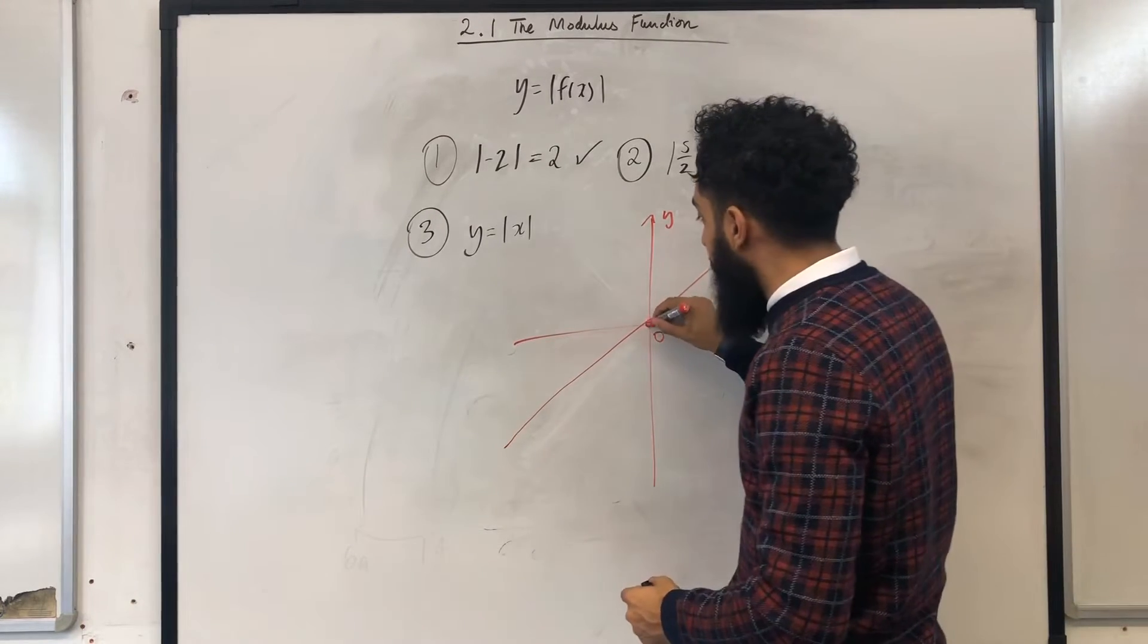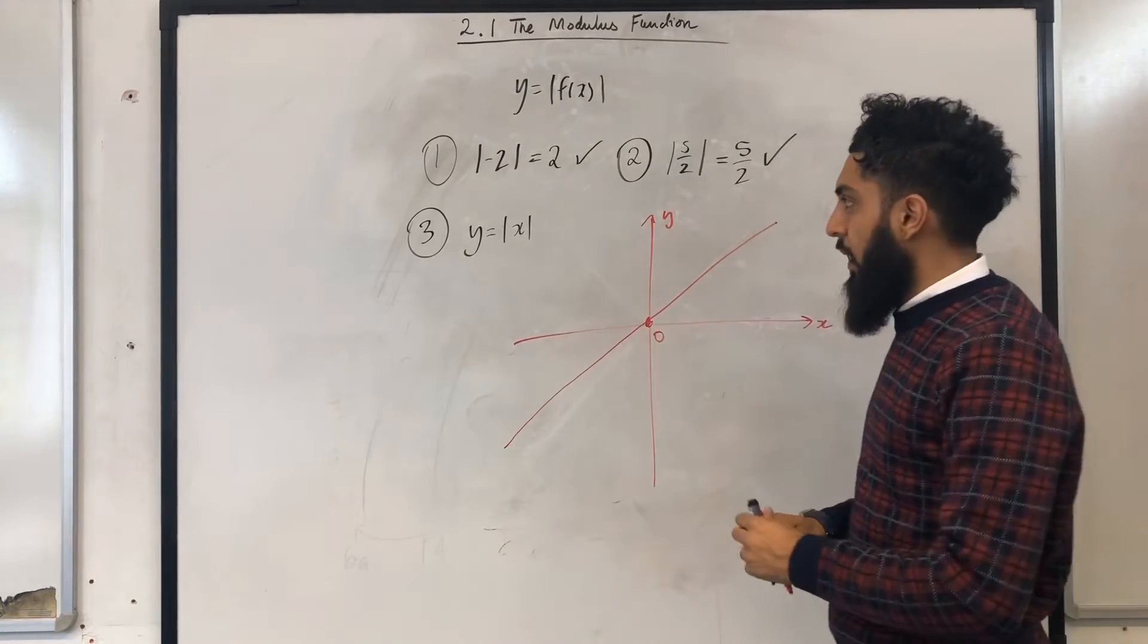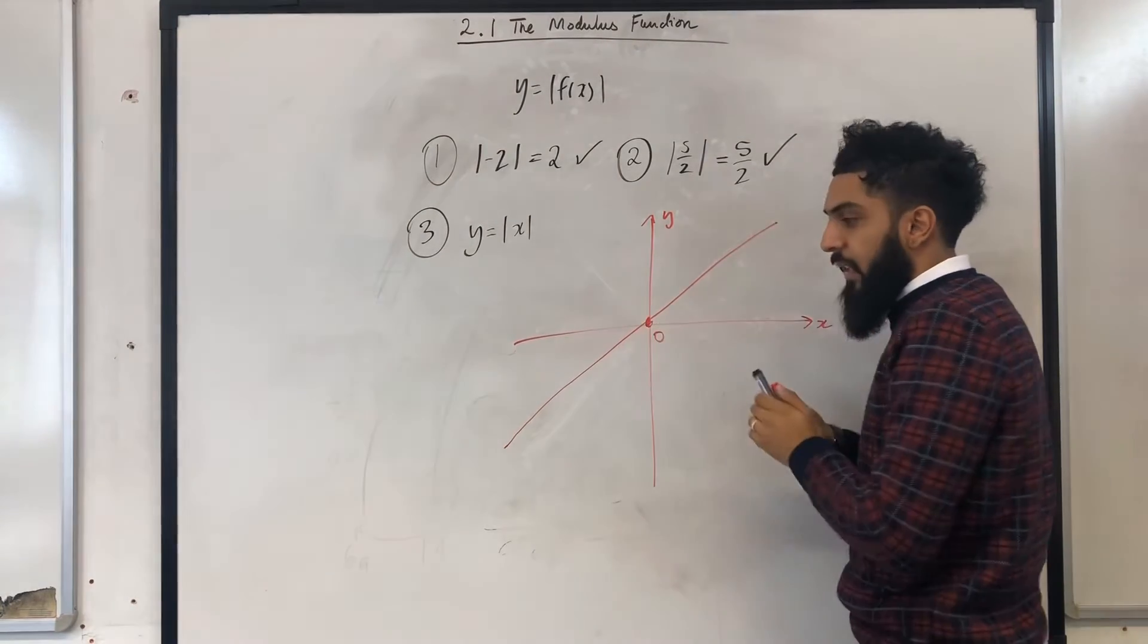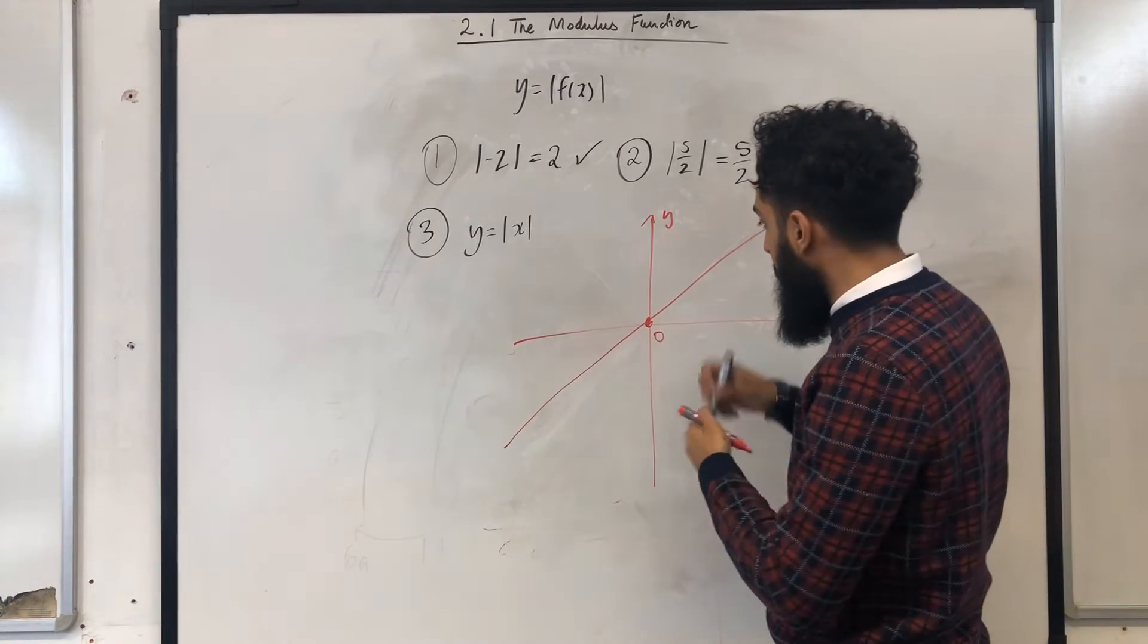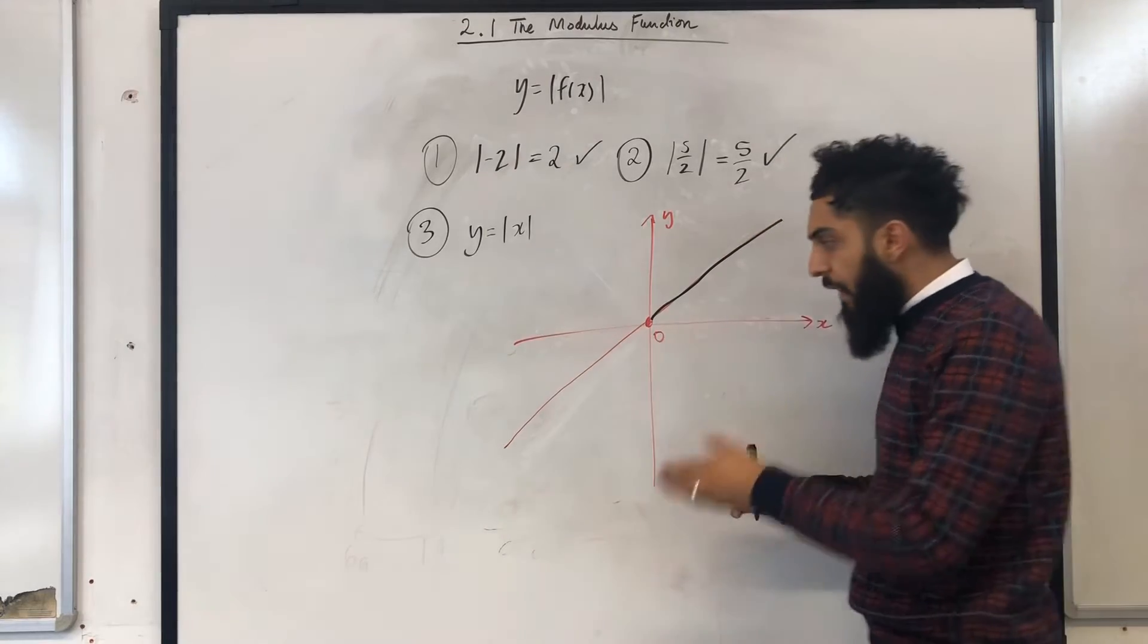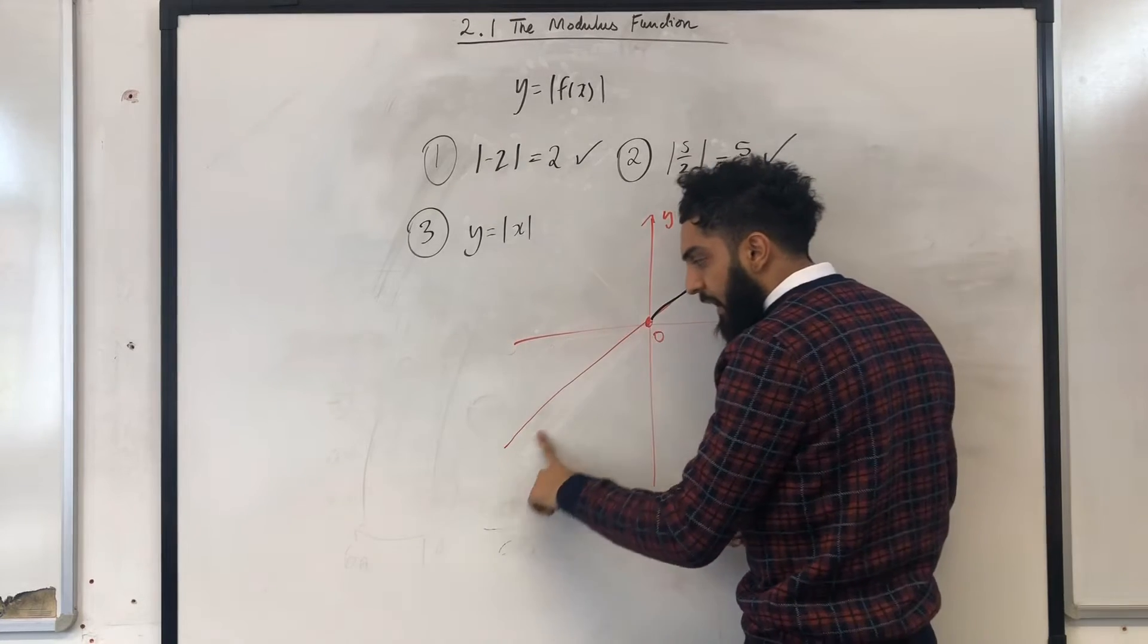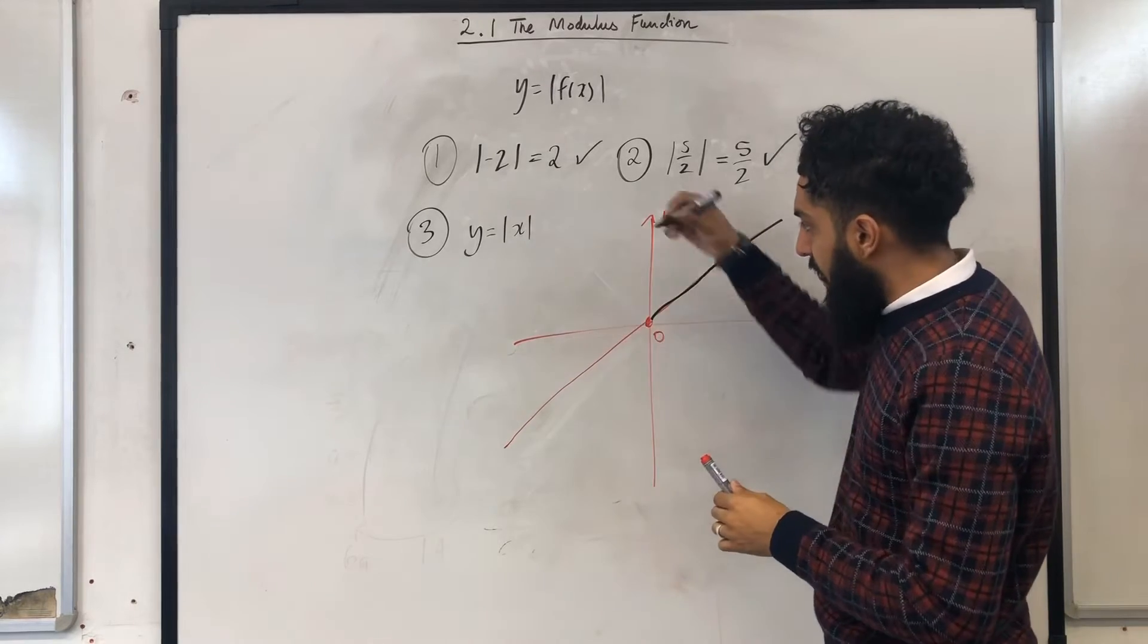What I'm interested in is sketching y equal to the modulus of x. Well to do this we have to look at two parts of the graph. The part that's above the x axis stays the same. I'll go over it in black. The part that's below the x axis gets reflected in the x axis. So if I reflect this particular line in the x axis I get the following.